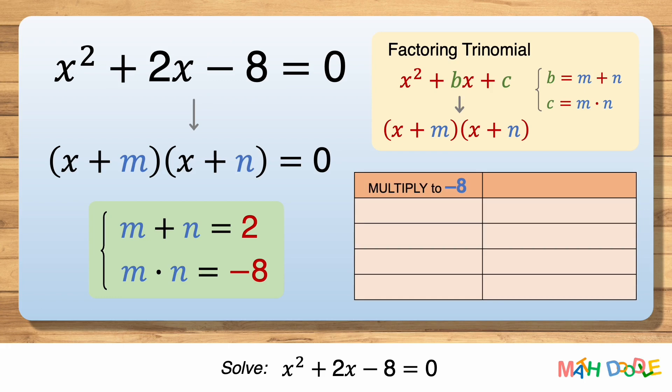First, let's think about all the combinations of two numbers that multiply to minus 8. 1 times minus 8 is minus 8. Minus 1 times 8 is minus 8. 2 times minus 4 is minus 8. And, minus 2 times 4 is also minus 8.